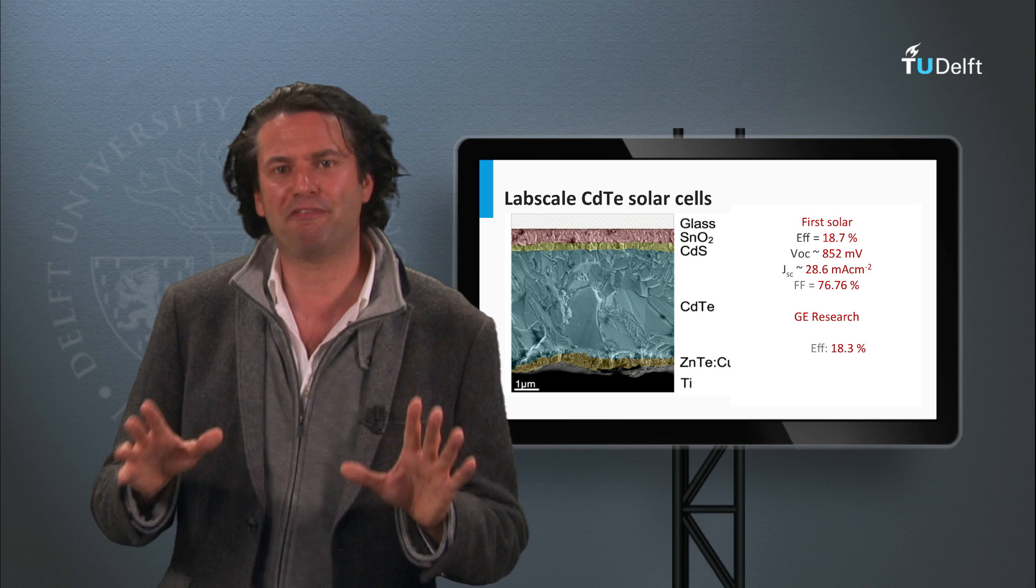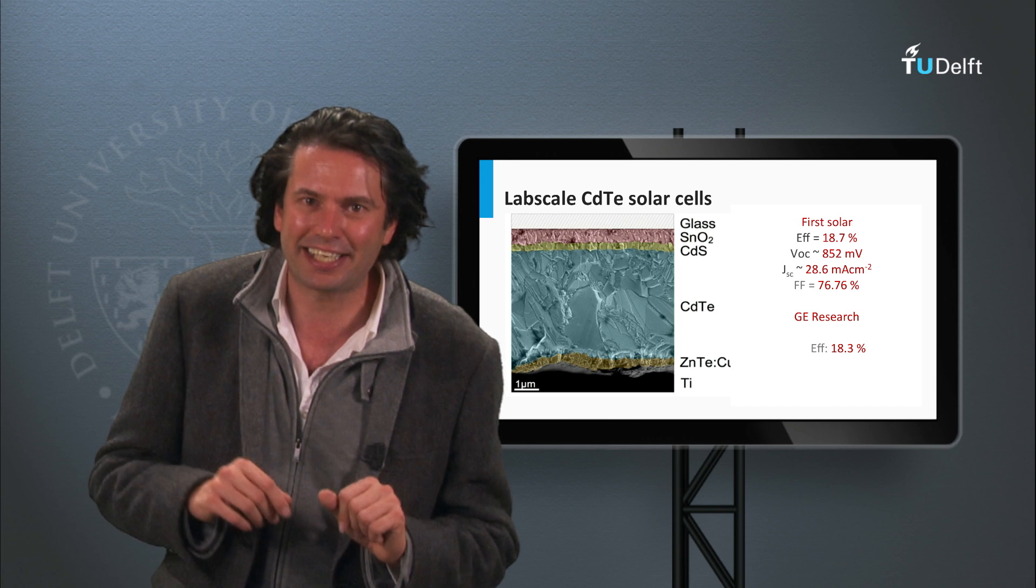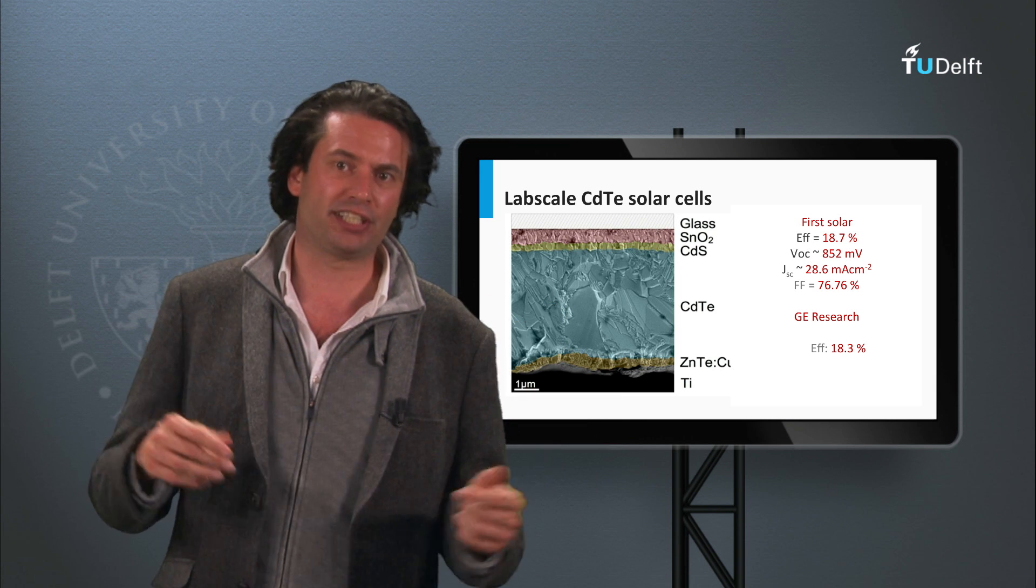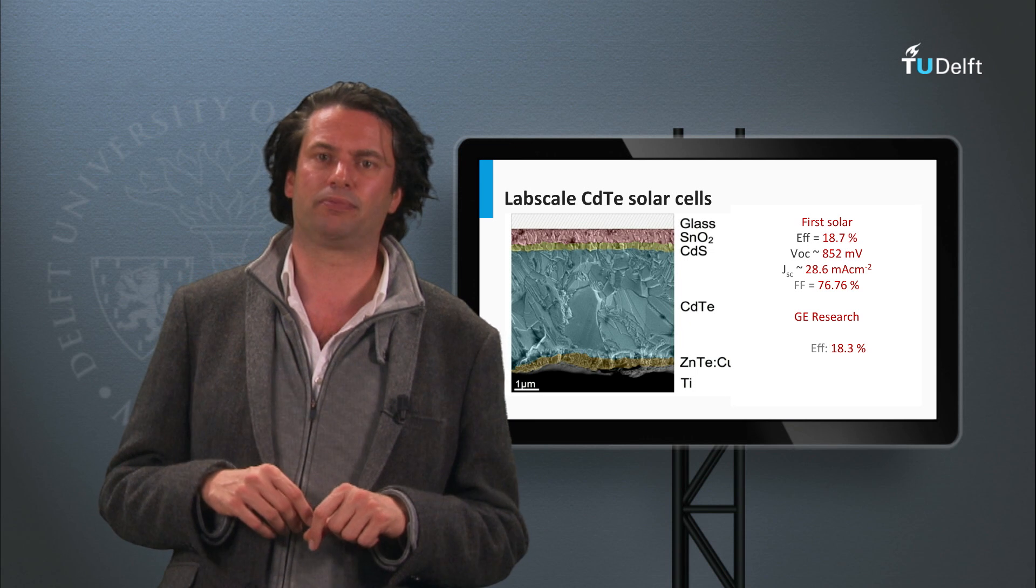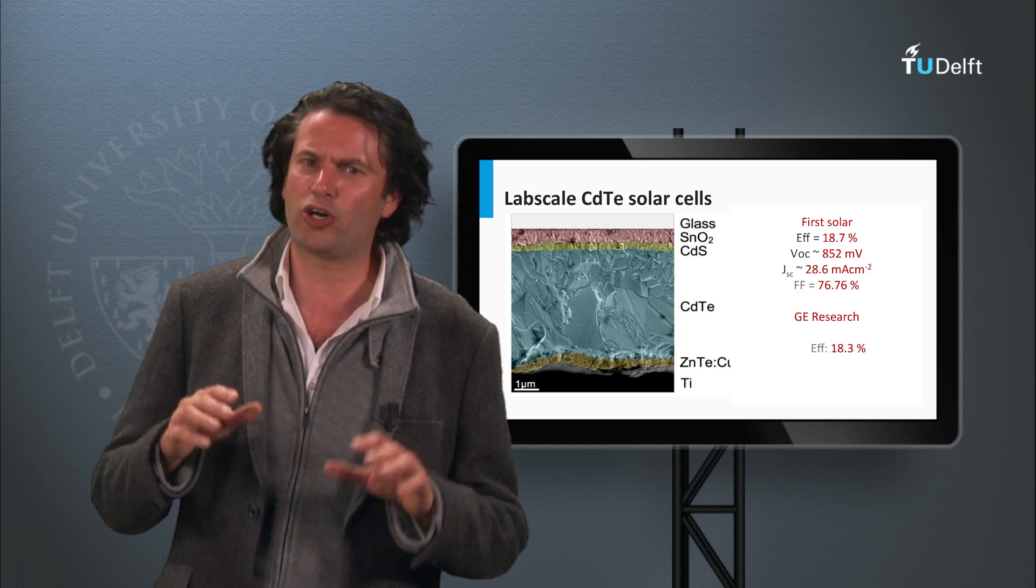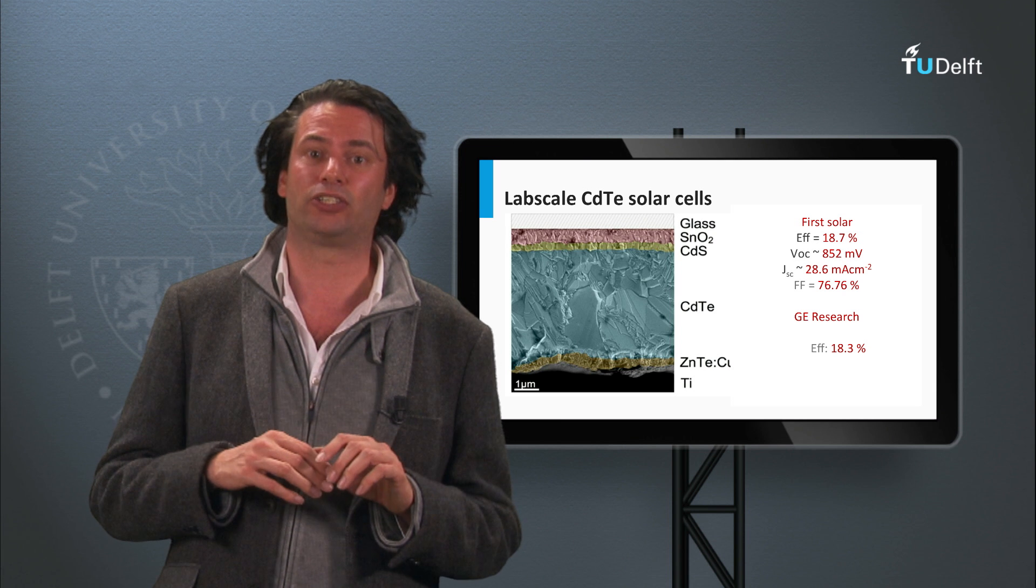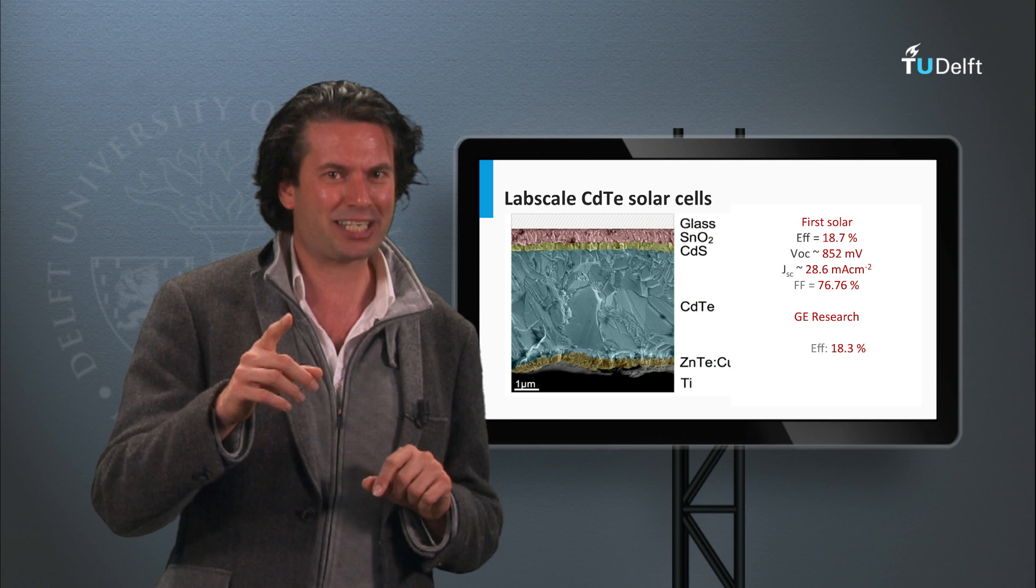So far, we have discussed the inorganic thin-film semiconductor materials like amorphous and nano-crystalline silicon, CIGS, and cadmium telluride solar cells. In the next block we are going to look at organic and dye-sensitized solar cells. See you in the next block!